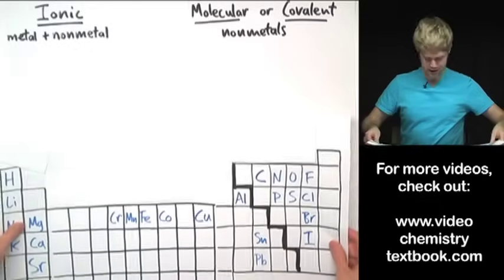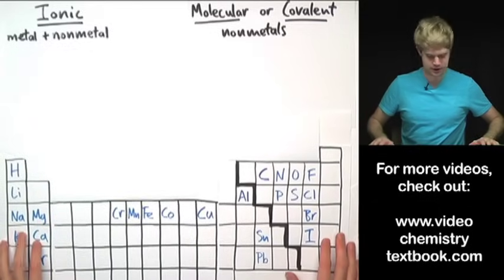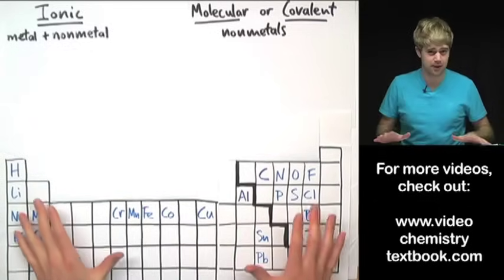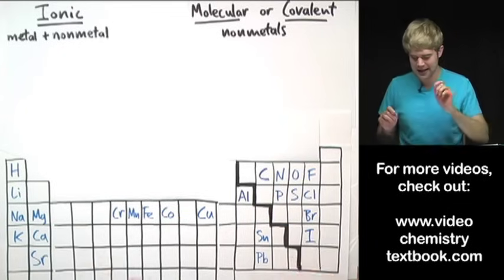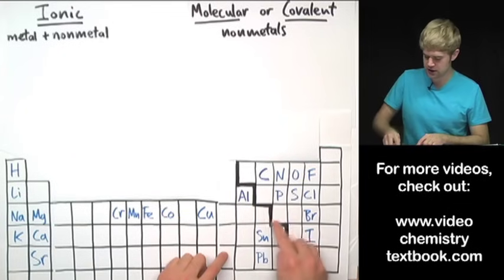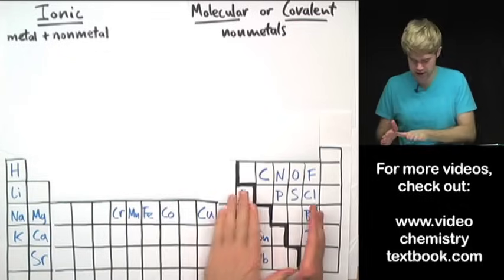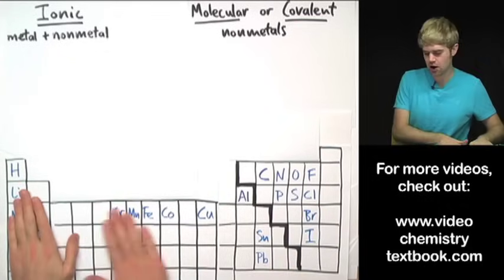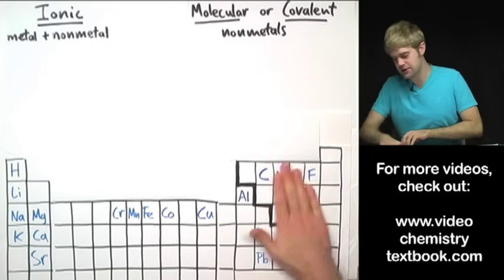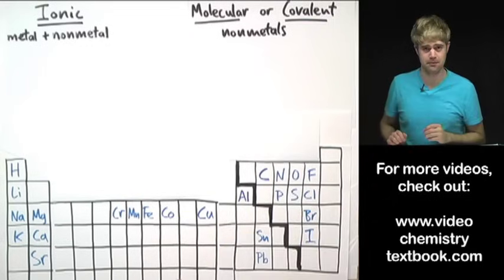You will need a periodic table to do this. Here's one that I'm using. I've left out a lot of the elements because they're not important, but what is important is this big thick staircase that divides the periodic table into two parts. On this side of the staircase are the metals and on this side of the staircase are the non-metals.